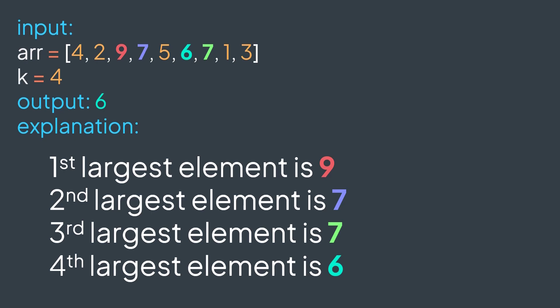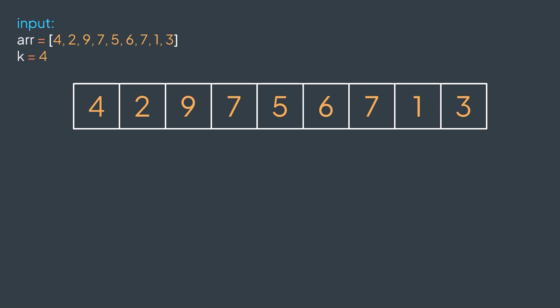The first possible solution that we may think of is to remove the maximum element k-1 times, because after doing so, the next maximum represents the kth largest element. For example, with our array, k is 4, so we remove the maximum element three times.